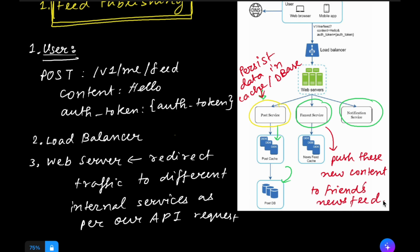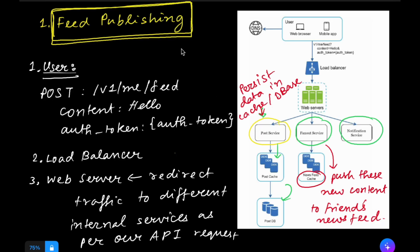The new content pushed by the fanout service is stored in cache for fast retrieval. Finally, we have the notification service, which informs a particular friend that their friend has posted or updated something. To learn more about how a notification service works, you can see the playlist on designing a notification system — the link will be in the description.